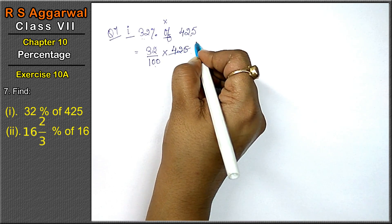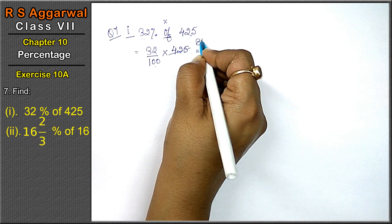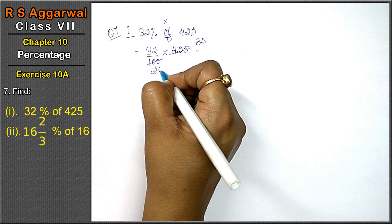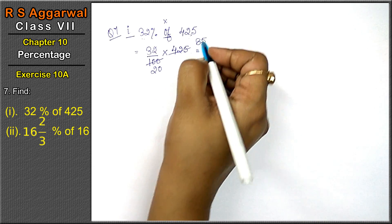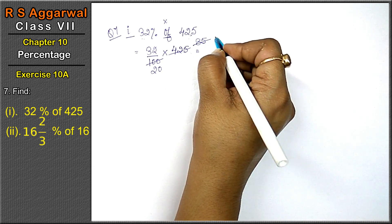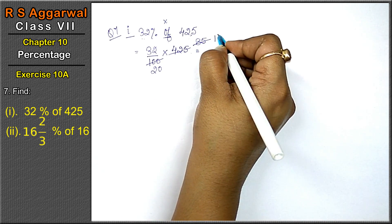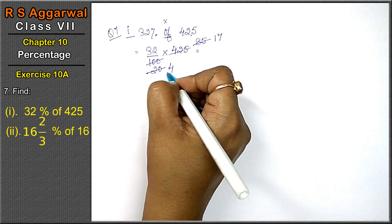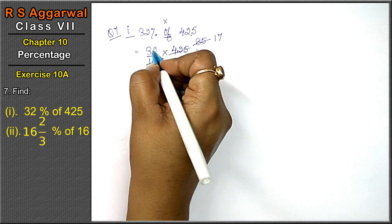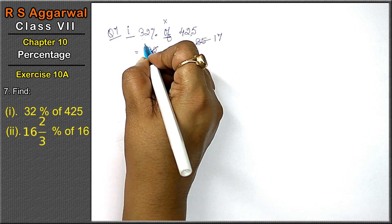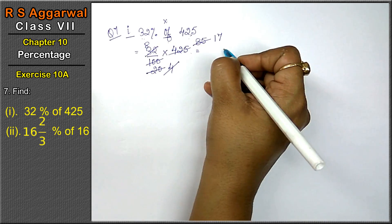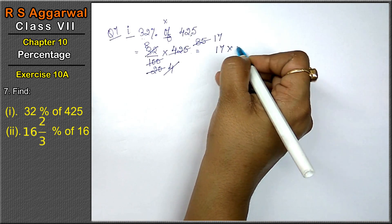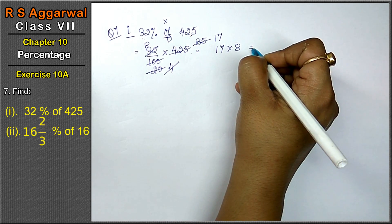Now, working through the multiplication: 5×8 is 40, 5×5 is 25, 5×2 is 10. Again, 5×1 is 5, 5×7 is 35, 5×4 is 20, 4×1 is 4, 4×8 is 32. So 17 into 8 is the answer.